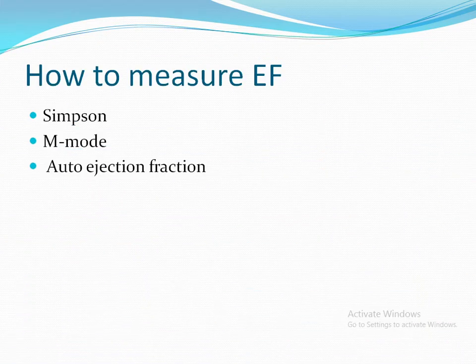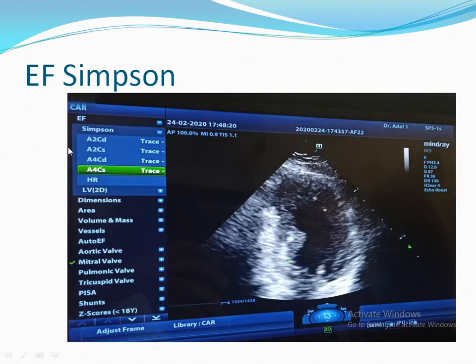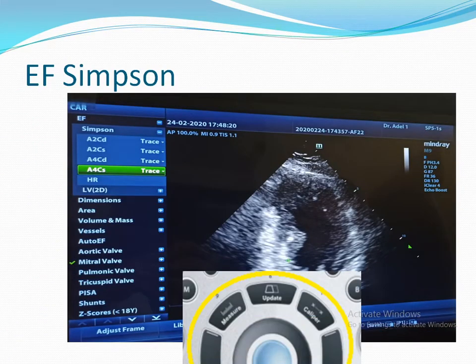How to measure Ejection Fraction — by Simpson's, by iMo, by area, and fractional shortening. First, we will start with Simpson's. You have to obtain the apical 2-chamber or apical 4-chamber view.